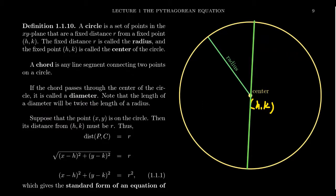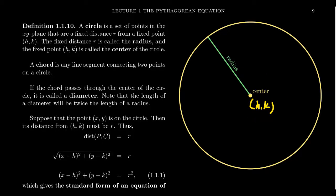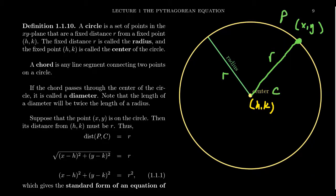Let's go with the notation we've established. Let's say the center of the circle has coordinate h comma k, the radius is a positive number r, and we take a fixed but arbitrary point on the circumference of the circle, x comma y. We know that the distance between the center of the circle and this point x comma y is a distance of r. So the distance between point p and center c should be equal to r.